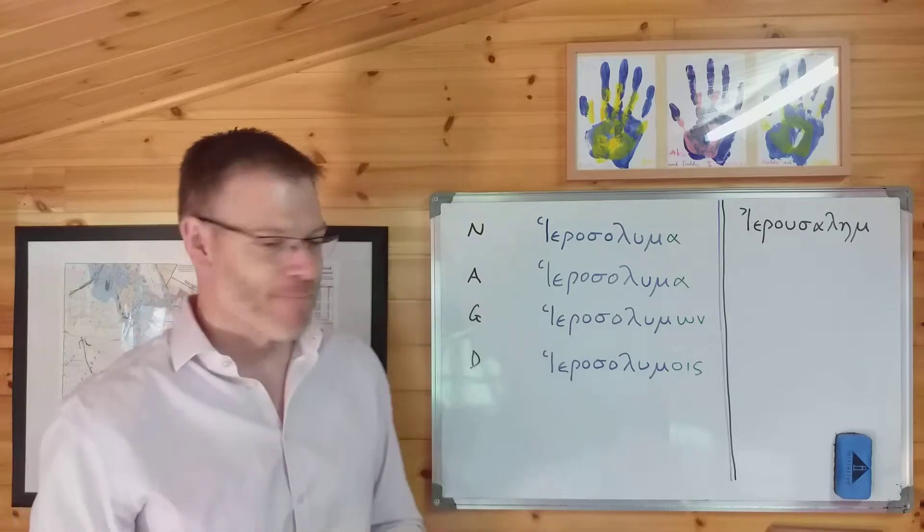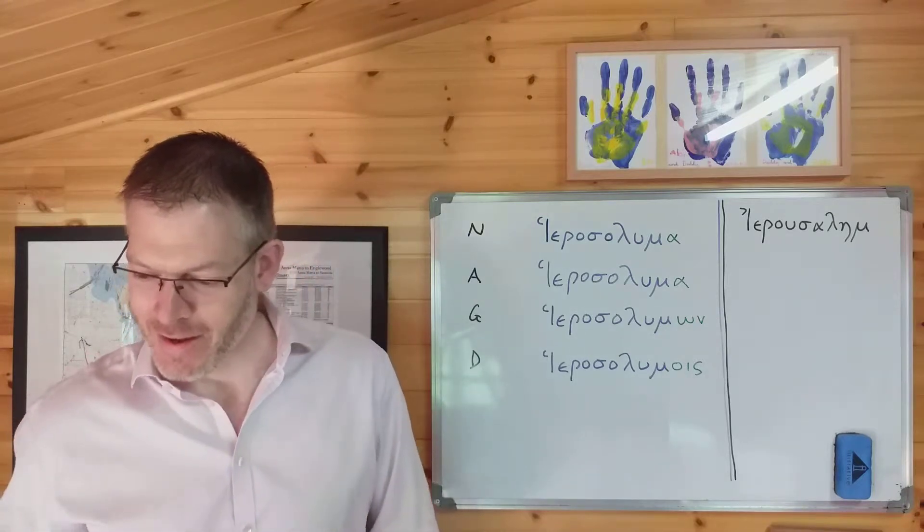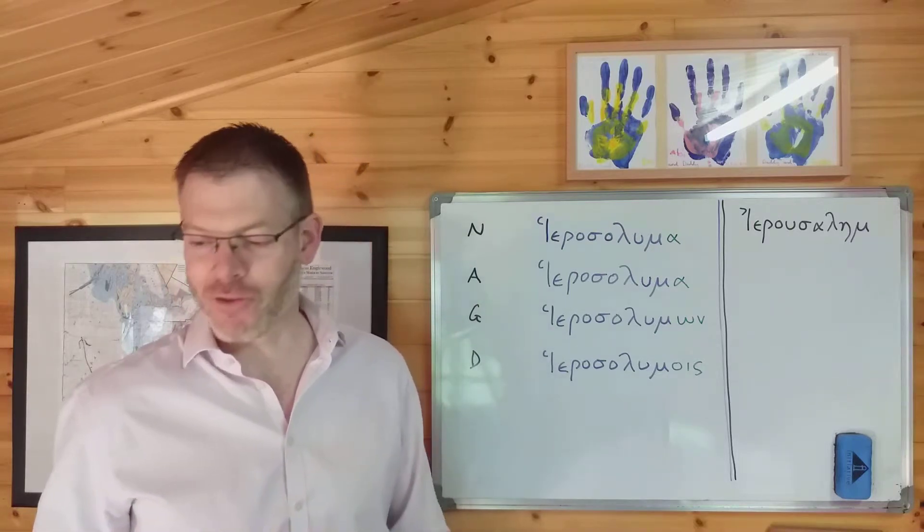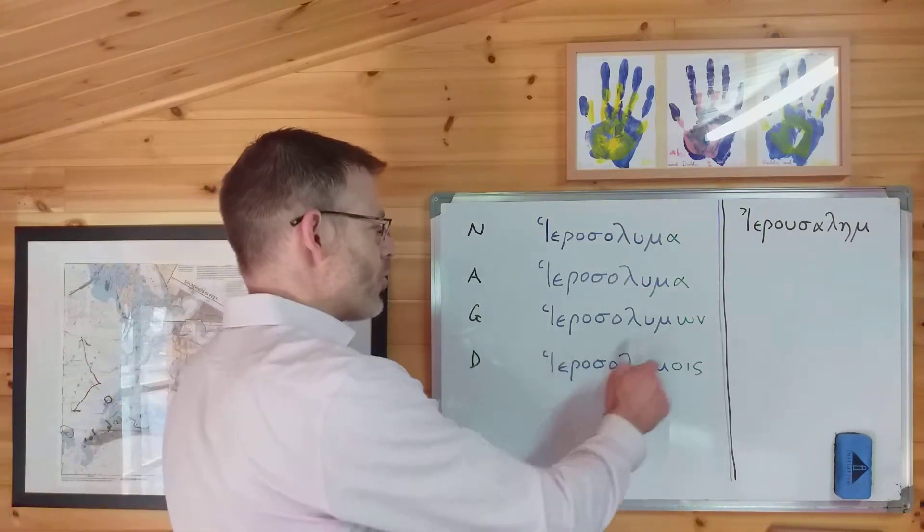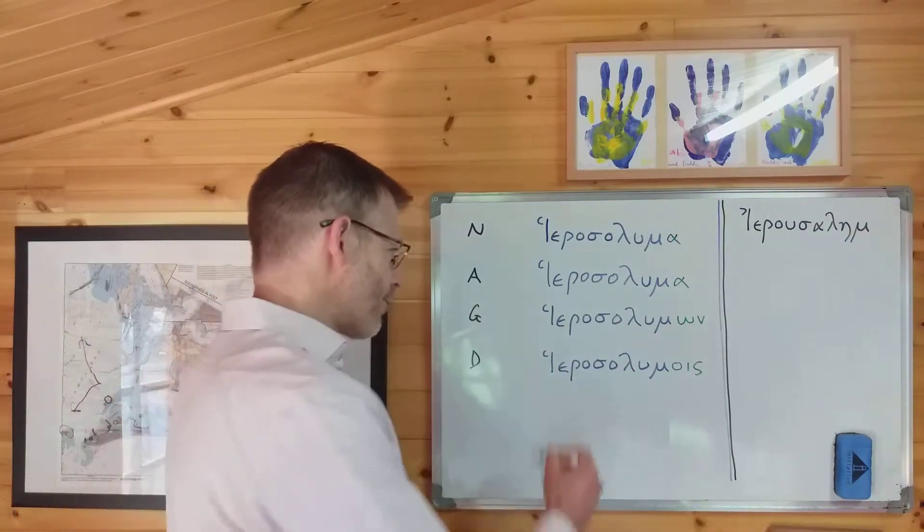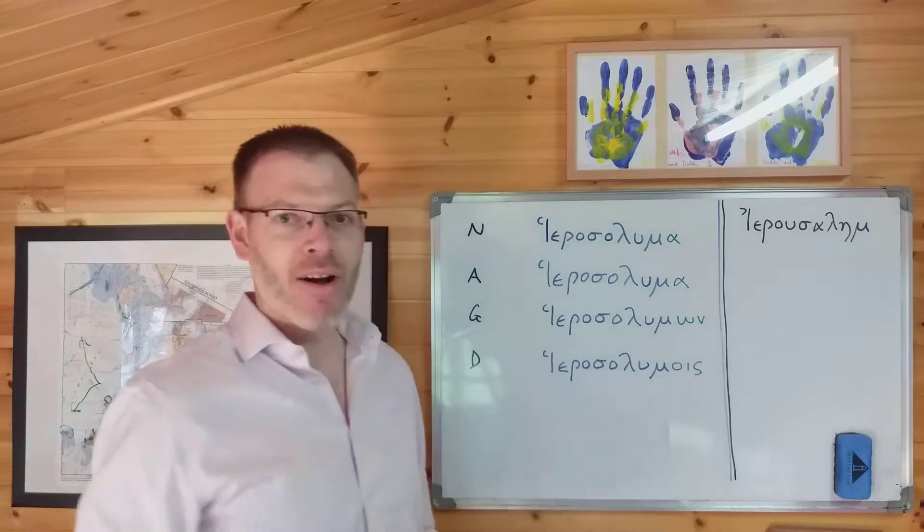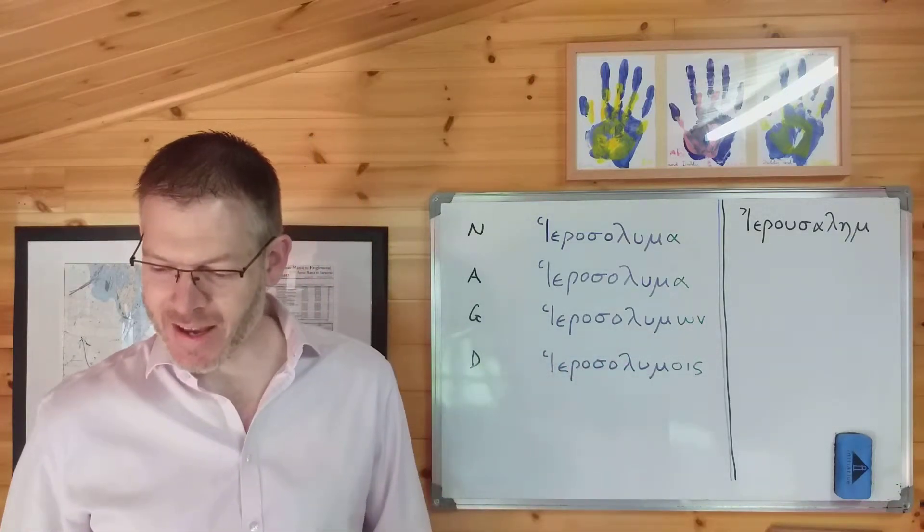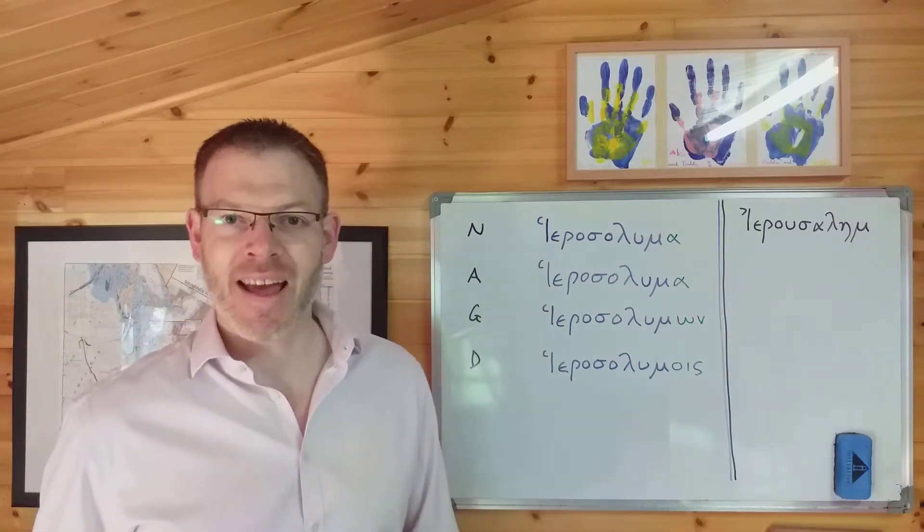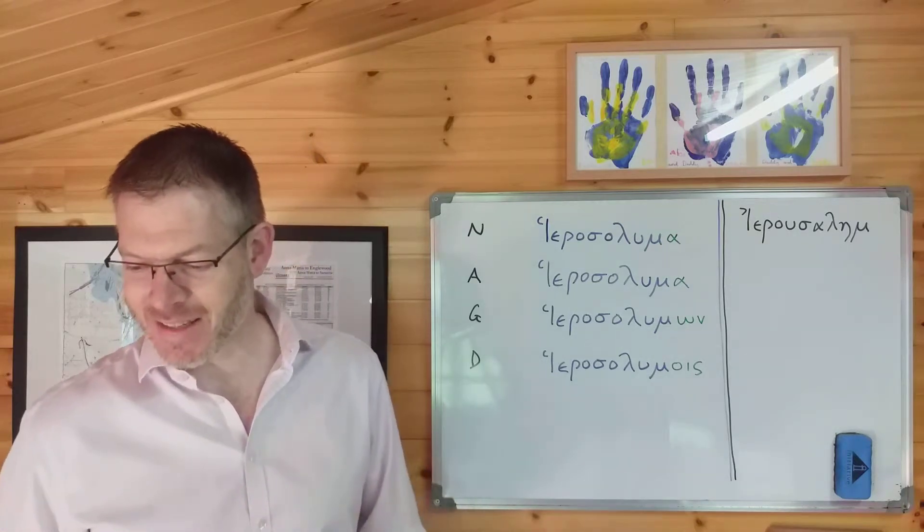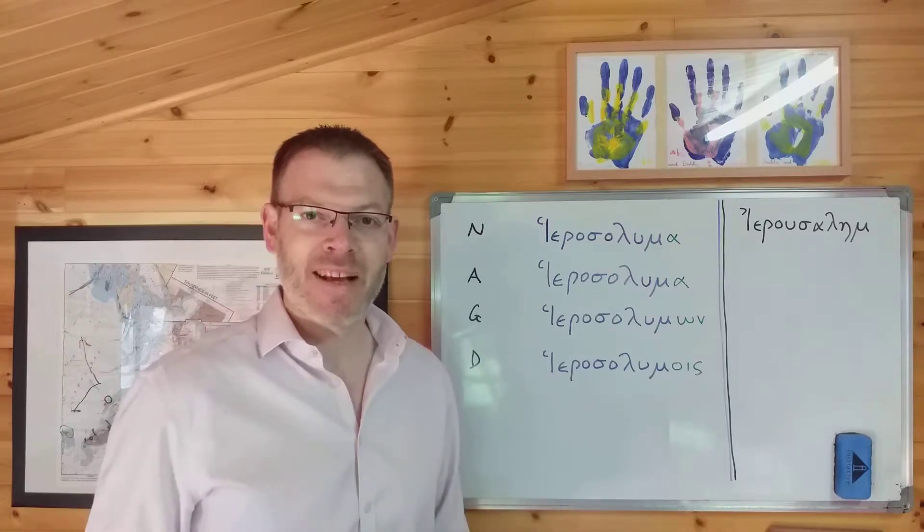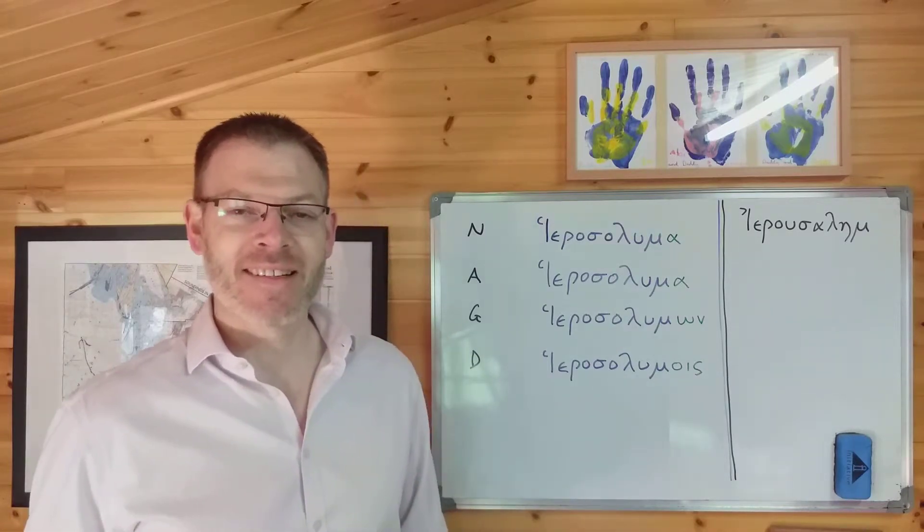An example of hierosaluma in the genitive case, you find in Matthew 15 verse 1, when the Pharisees and the scribes came to Jesus from Jerusalem, that's apo hierosalumon. Apo, a preposition which governs a noun in the genitive case, so appropriately, apo hierosalumon. And then finally in the dative case, a great persecution arose against the church in Jerusalem, in Acts 8 verse 1. In Jerusalem is en hierosalumois, en being a preposition which governs a noun in the dative case.